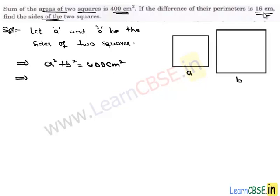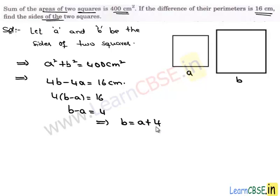The difference between their perimeters is 16 cm. So 4B minus 4A is 16 cm. Taking 4 common we get B minus A equals 16, and by dividing with 4 we get B minus A is 4. This implies the value of B is A plus 4.